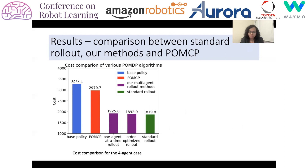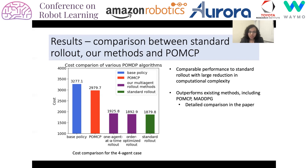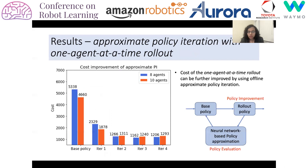Our methods perform similar to the standard rollout method while decreasing the computational complexity dramatically. Our method outperforms POMCP in this problem. We use a network with 32 different nodes with five different damage levels that evolves according to a Markov chain and four agents to repair the entire network.